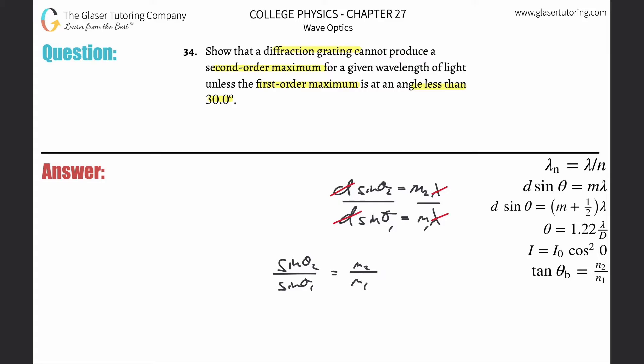Now let's rearrange this. Let's do sine of theta 2 is going to be equal to sine of theta 1. We'll cross multiply by m2 over m1. Now let's start plugging in some numbers.